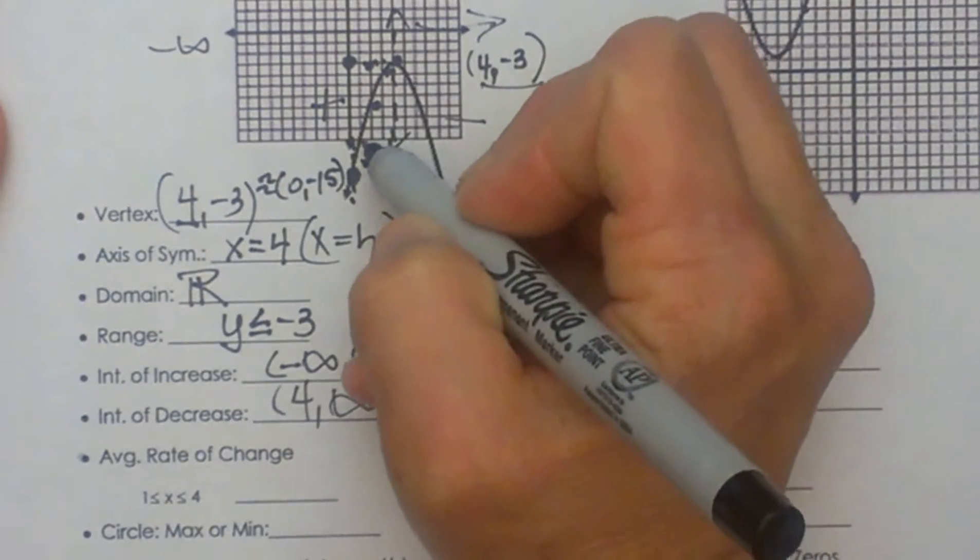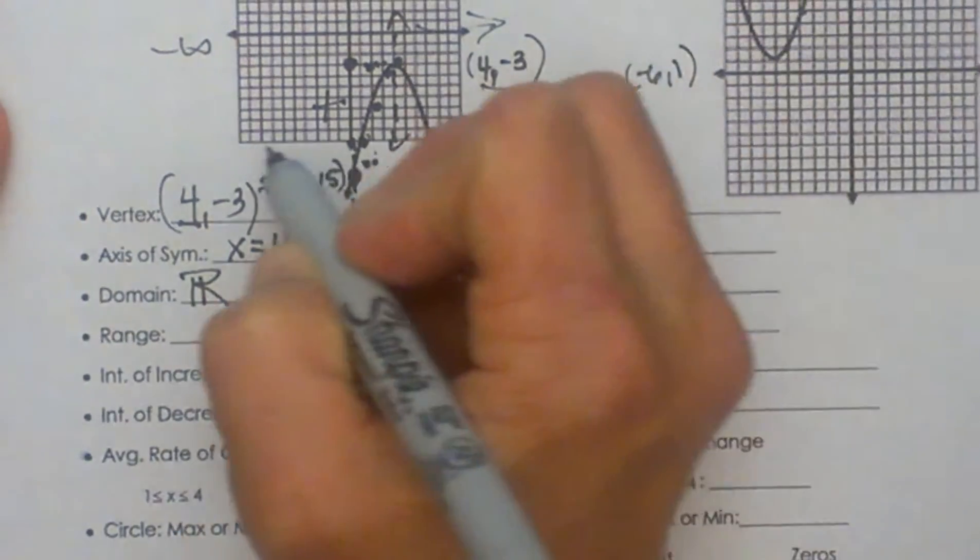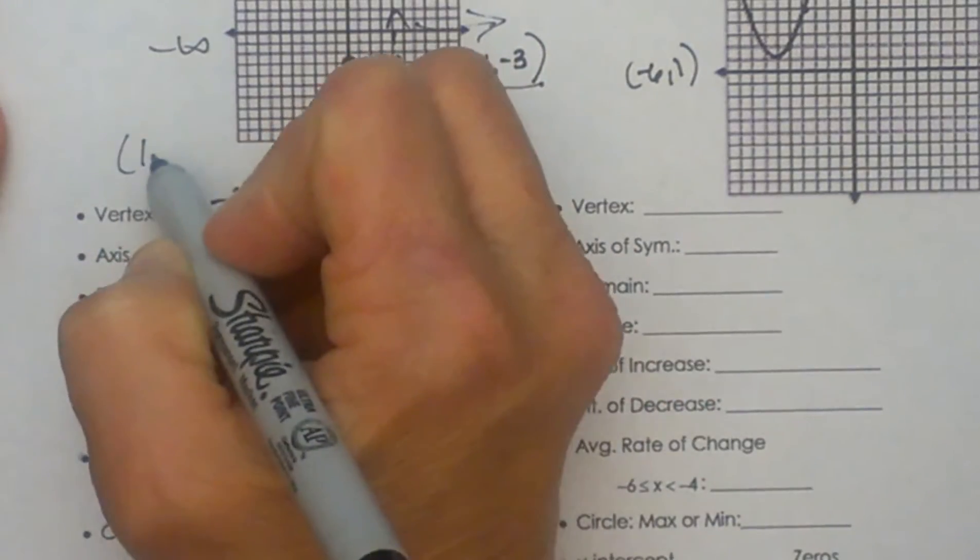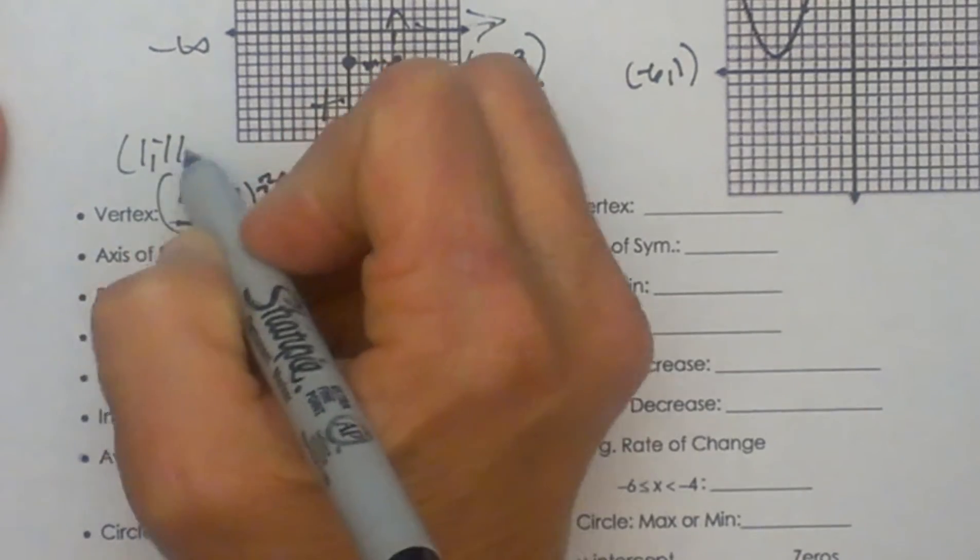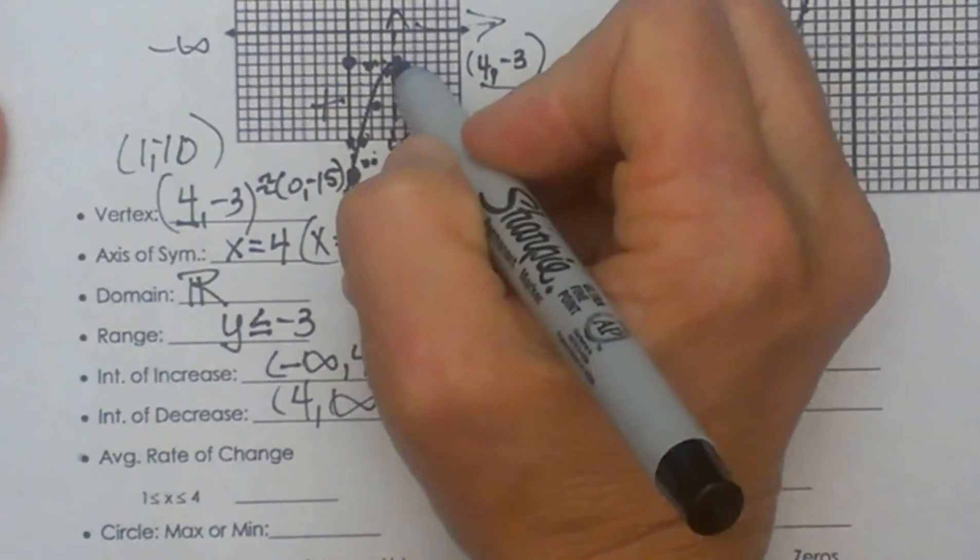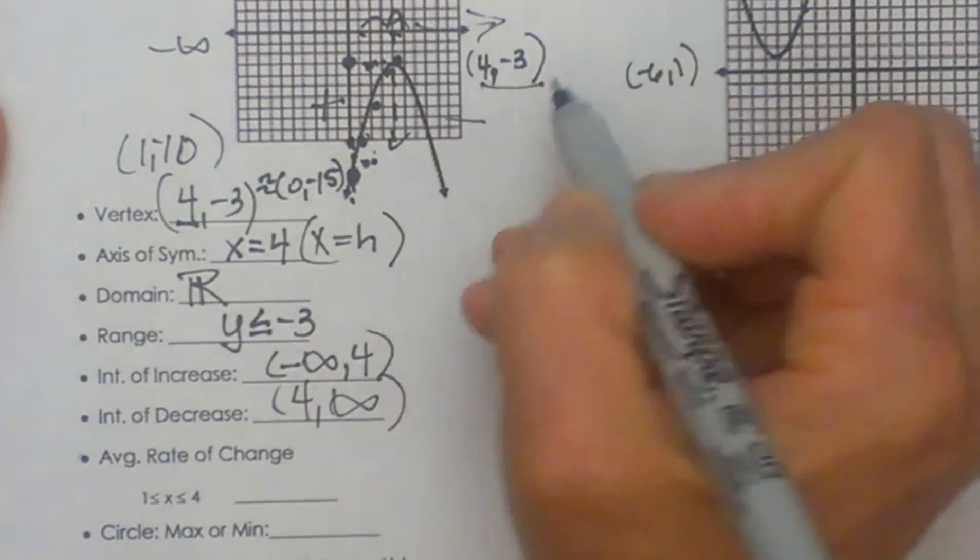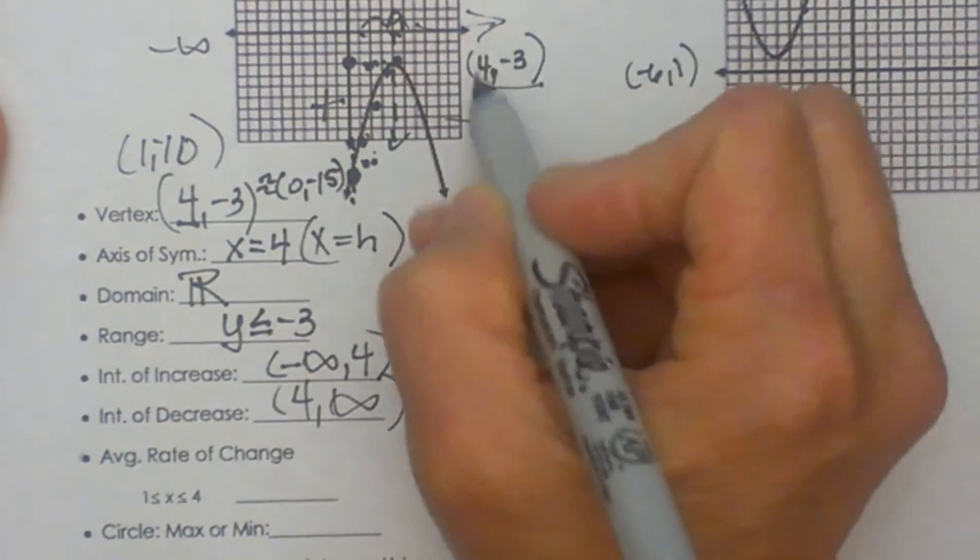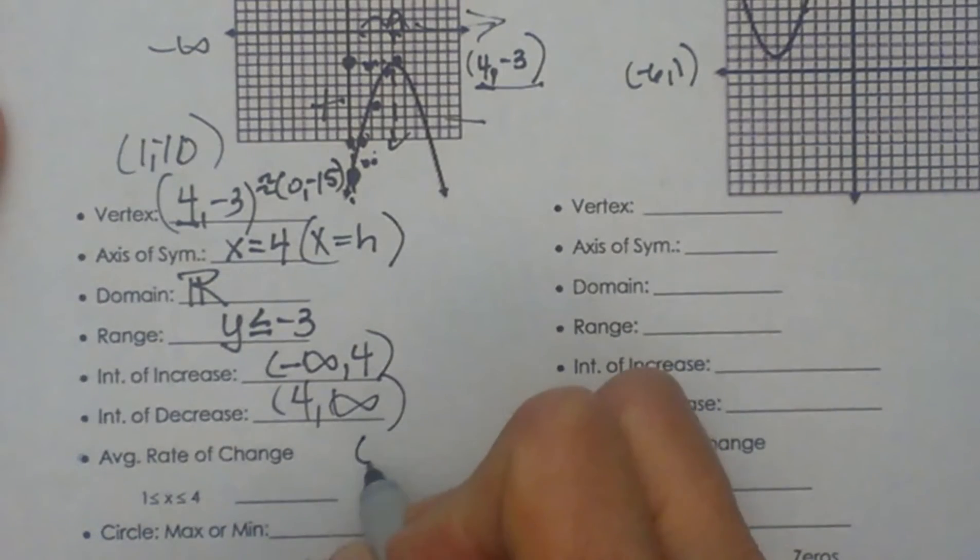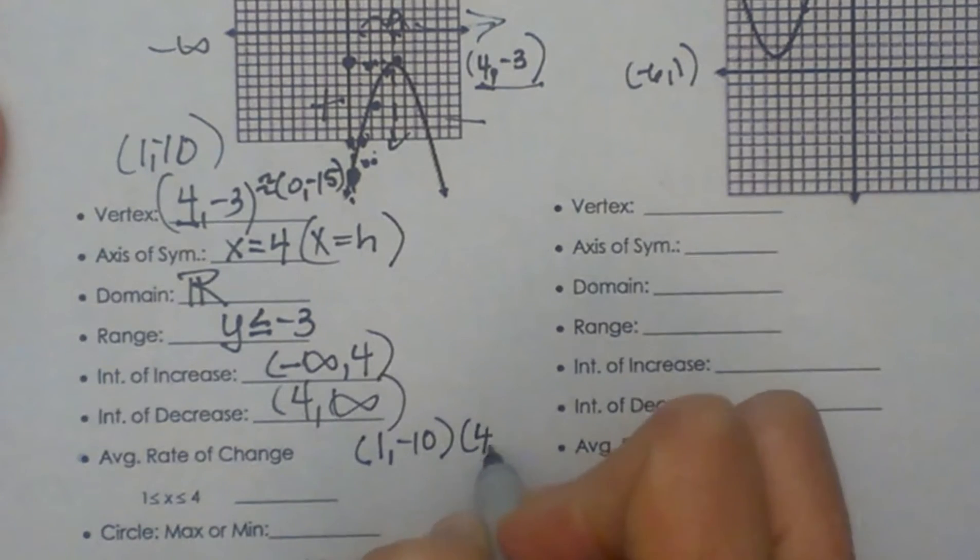From the value 1, let's see 1 looks like it is at the point 1 comma negative 10 and then up to the value of 4 on the x axis. So we are looking at this interval from 1 to 4 and that ordered pair is 4 negative 3. So I am going to write those down. I have 1 negative 10 and 4 negative 3.